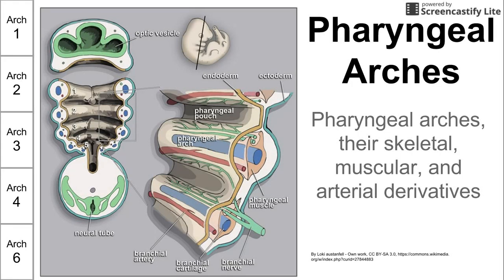This is a brief video on pharyngeal arches — how they develop and what they turn into during human embryonic development. There are six arches present in the embryonic stage, but the fifth pharyngeal arch actually goes away. So we're going to be talking about arches one, two, three, four, and six. We'll cover their skeletal derivatives, their muscular derivatives, and what the major artery in each arch turns into.